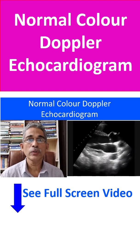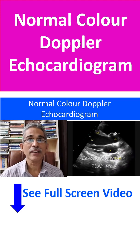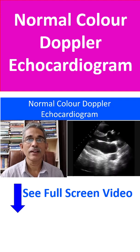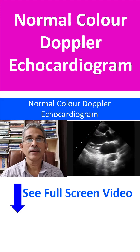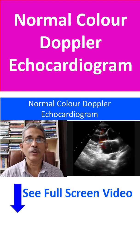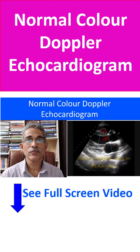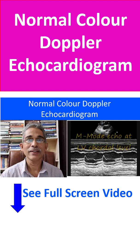We will review a few video clips from a normal colour Doppler echocardiogram in multiple views, like parasternal long axis view, which is the first view often obtained in adult echocardiography, parasternal short axis view, apical four chamber view, and suprasternal long axis view.